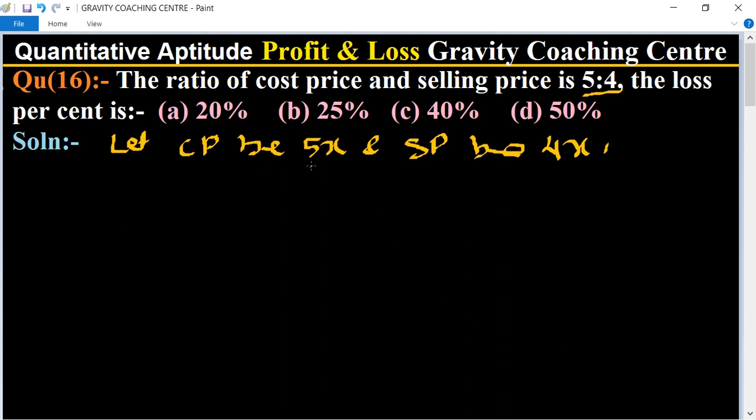So CP is 5x and SP is 4x. In this case, loss equals CP minus SP.